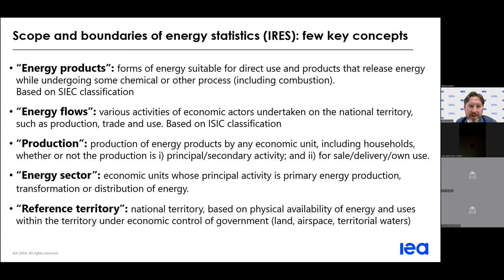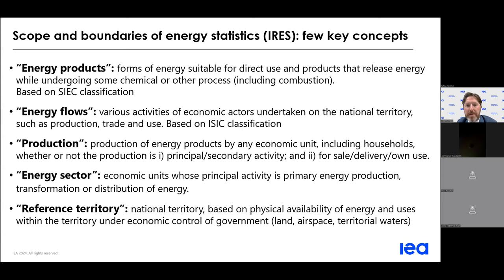IRIS includes several items that help define this boundary. Firstly, there are energy products, which are the forms of energy suitable for direct use, such as coal, oil, gas, and electricity. We have energy flows, which are the activities involving the production, trade, transformation, and final use of energy across the consuming sectors. These flows are defined based on the International Standard Industrial Classifications of all economic activities, otherwise known as ISIC codes.